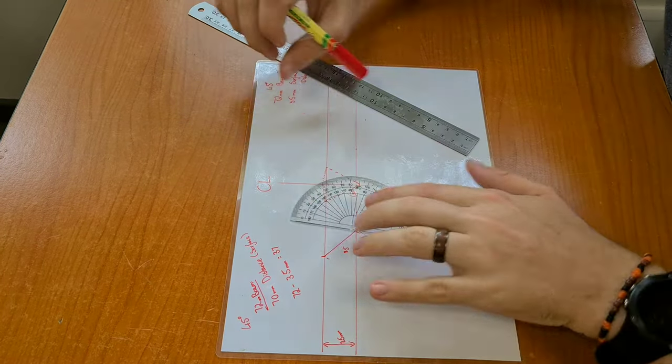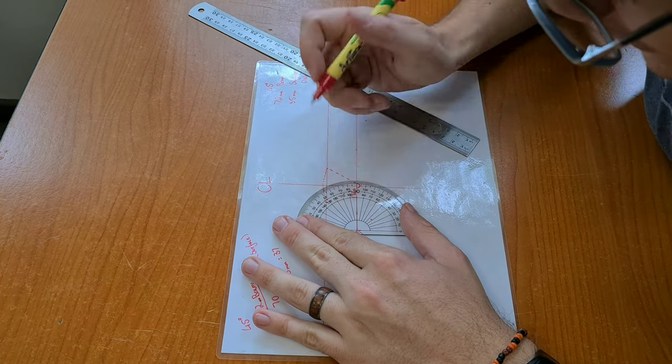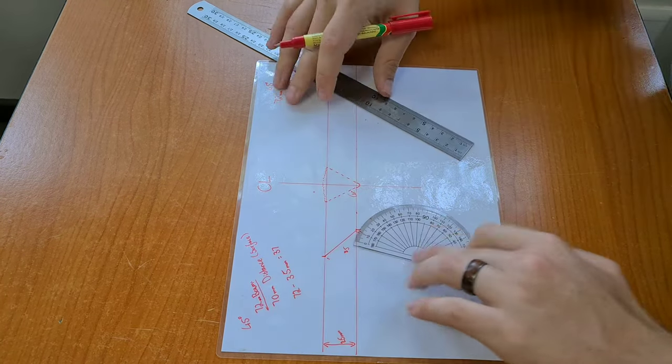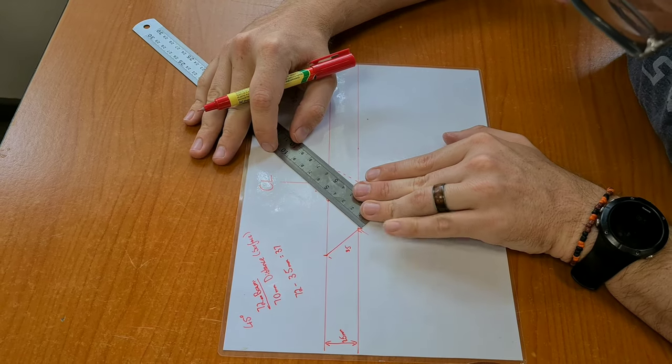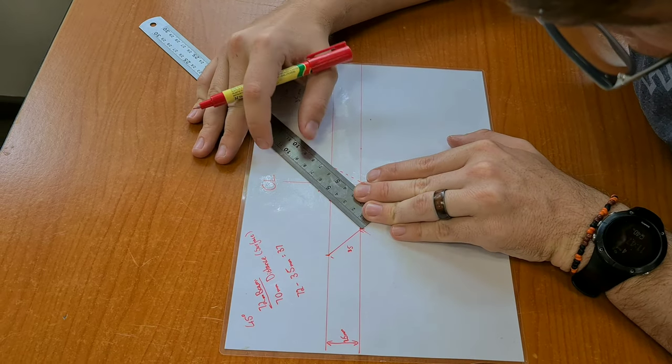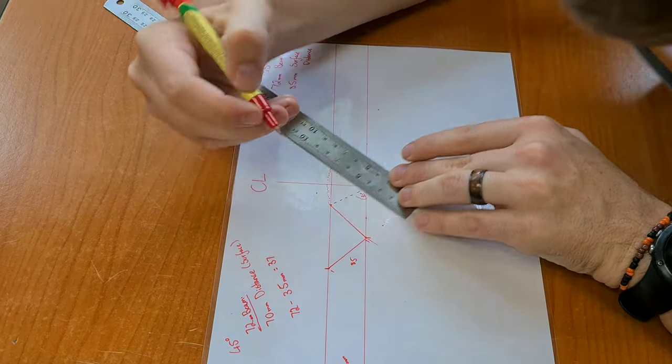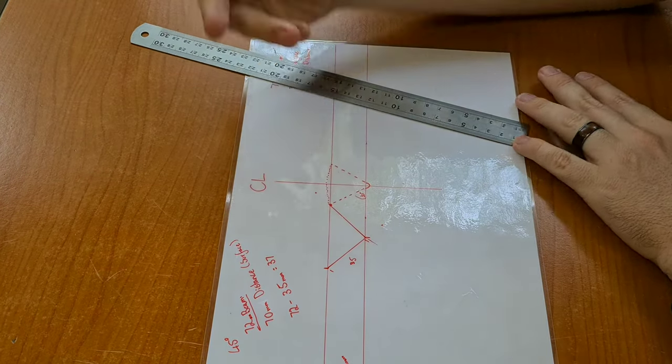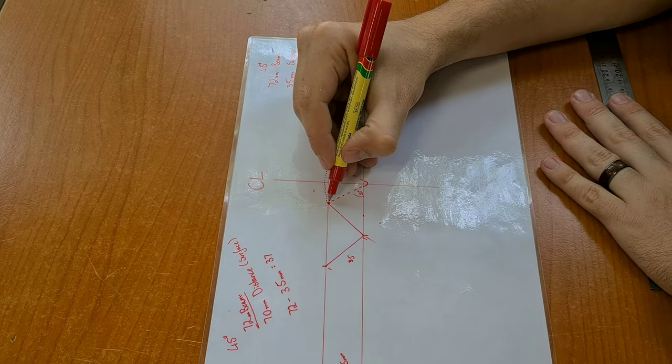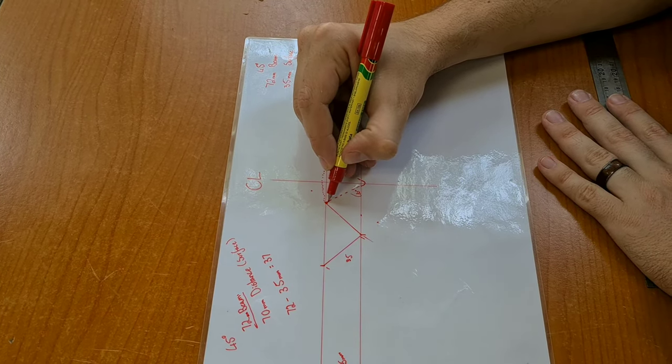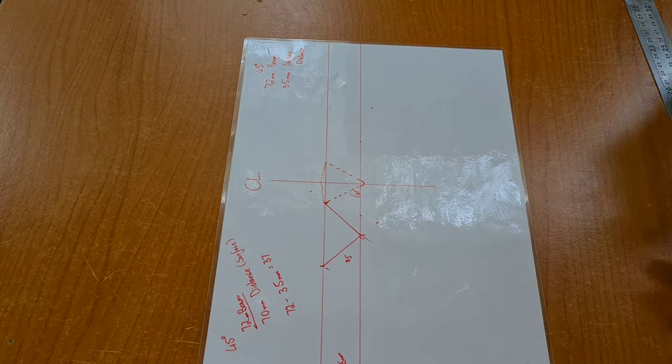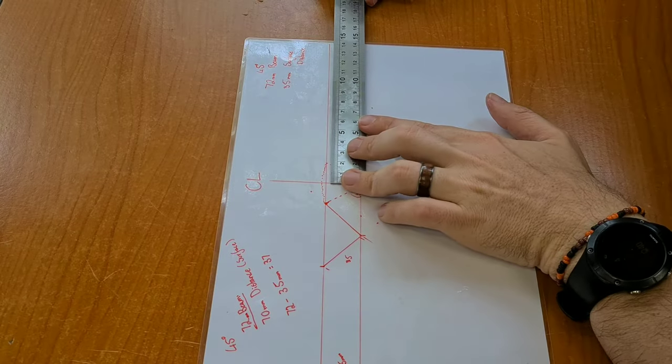Now if we have 72 and we minus 35, we should be left with about 37. So once again, let's draw in our line at 45 degrees. So it looks to be right about here. It might bounce a little, two millimeters from the top here.